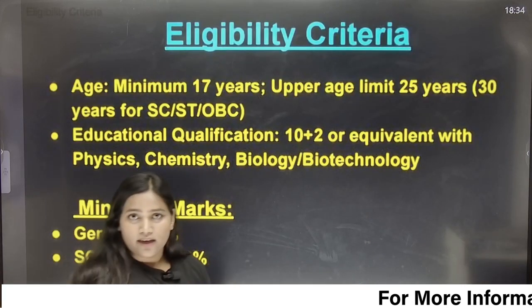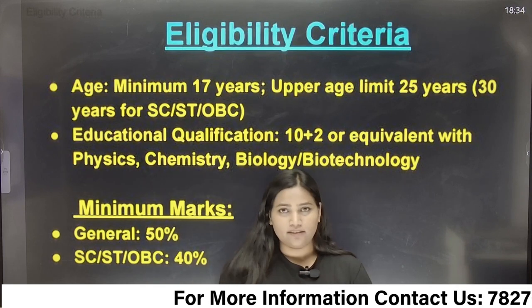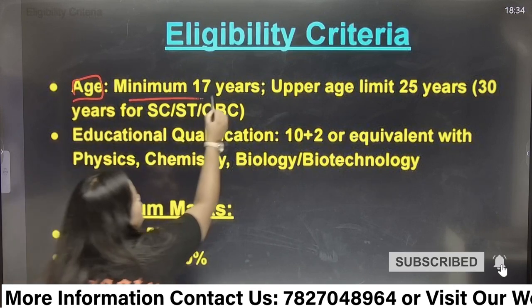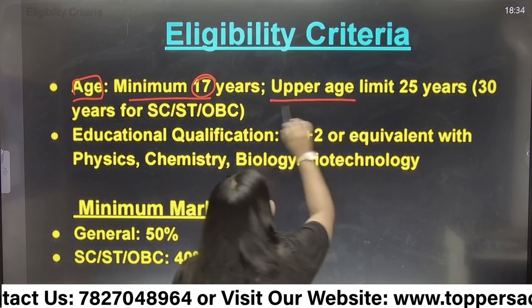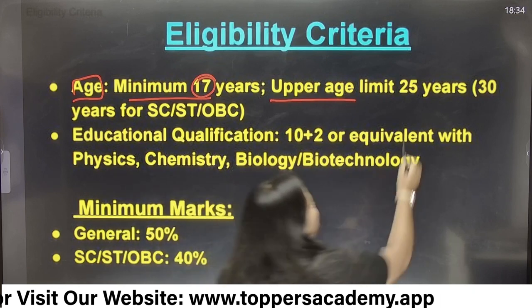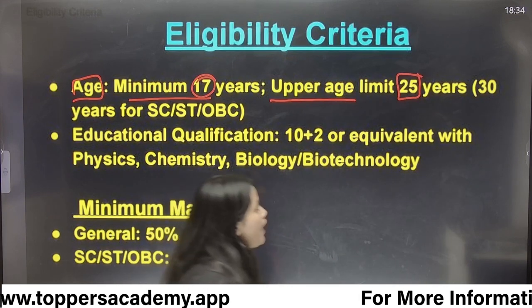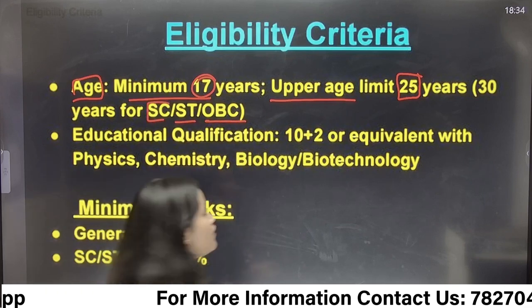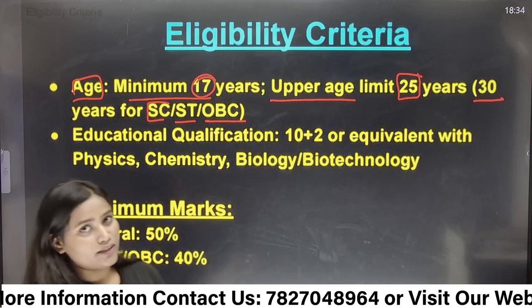What is the eligibility criteria? The minimum age is 17 years. The upper age limit — when can you give your exam — is 25 years for the general category. For SC, ST, and OBC candidates, the upper age limit is 30 years.